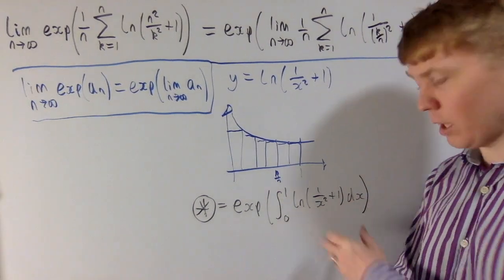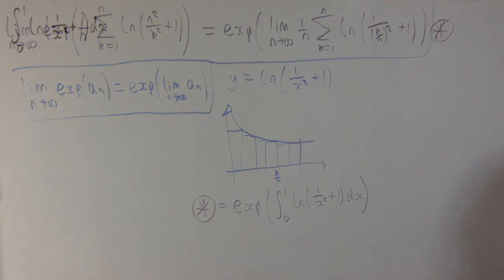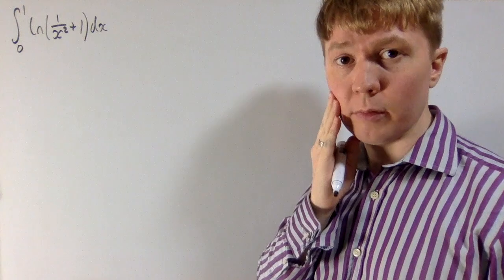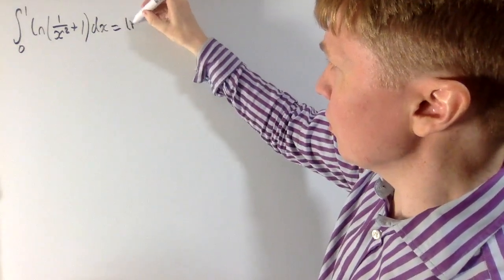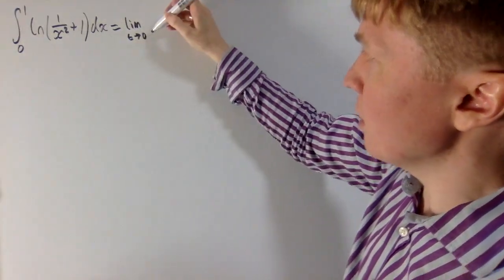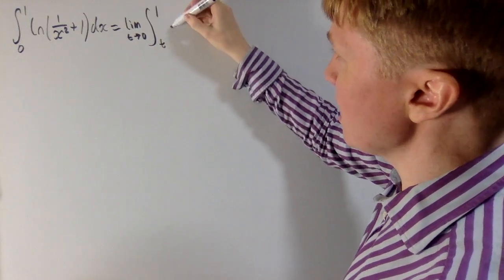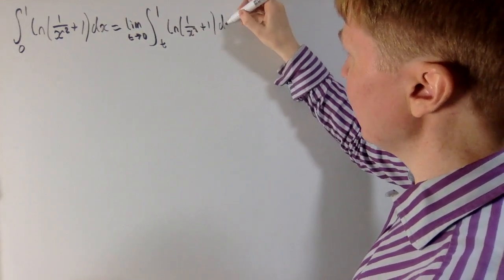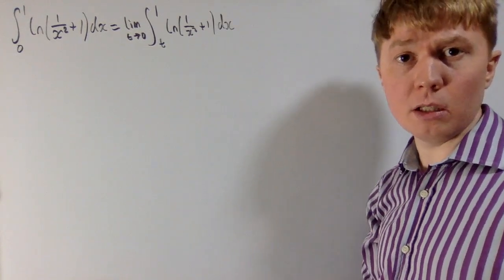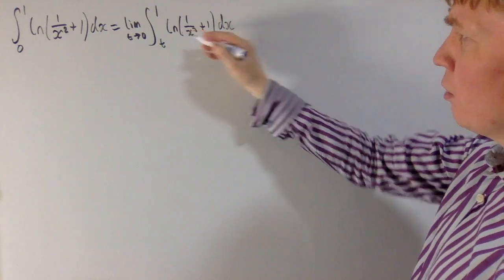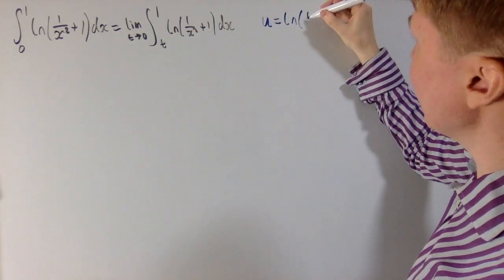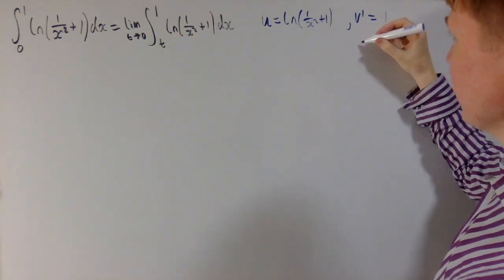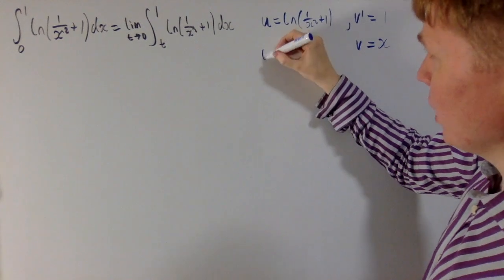We need to evaluate the integral from 0 to 1 of ln(1 over x squared plus 1) with respect to x. The integrand isn't well defined when x is 0, so we rewrite this using limits: the limit as t goes to 0 of the same integral from t to 1. To integrate ln(1 over x squared plus 1), I don't know how to integrate this directly, but I could quite easily differentiate it. So we'll try integration by parts, setting u equals ln(1 over x squared plus 1) and v' equal to 1.